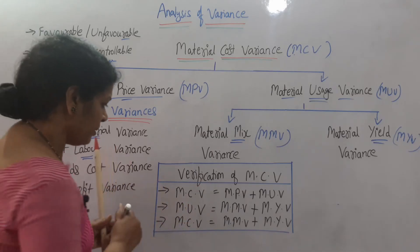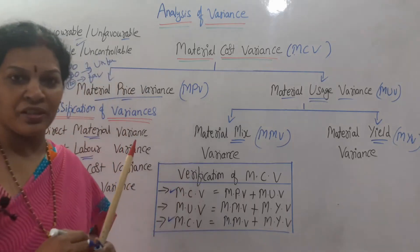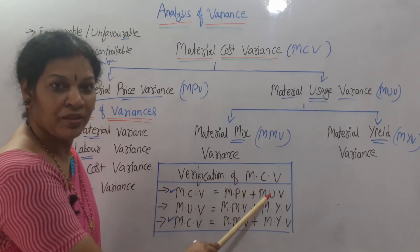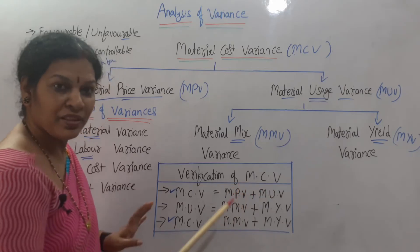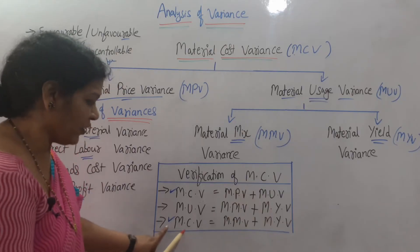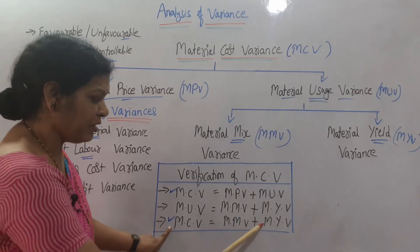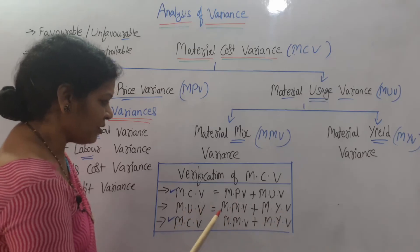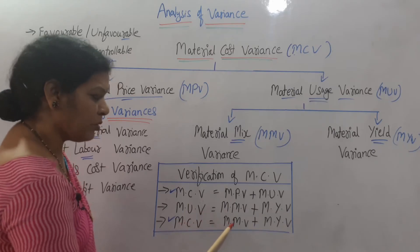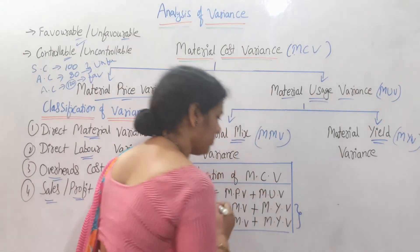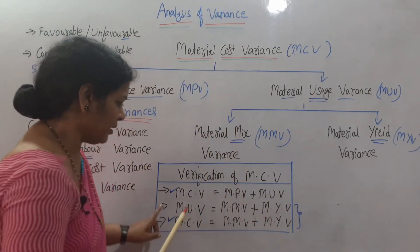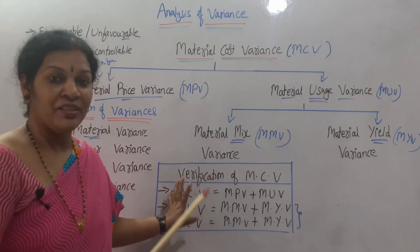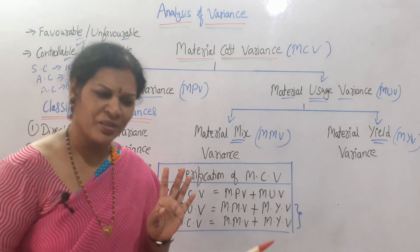For material cost variance, there are two ways to check it. If we have material price variance and material usage variance, use MCV = MPV + MUV. If material price variance is not available but we have material mix and yield variance, then use MCV = MMV + MYV. Note that MUV = MMV + MYV and MCV = MMV + MYV — both formulas are the same. When working out problems, use this verification to check your answers.